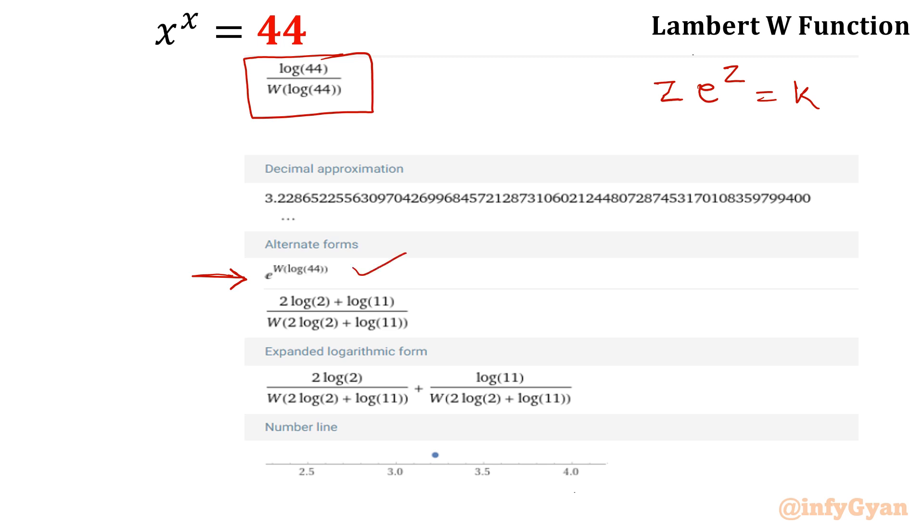This is one form. If I will distribute 44 using logarithmic property, log 4 into 11, so 2 log 2. By this rule we will generate the second form of Lambert W. Expanded logarithmic form. If you will expand it you will get like this. Numerator can be split with the common denominator. This value is 3.2286522. So this is how using Wolfram alpha function or Wolfram alpha tool.